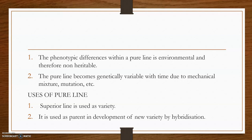During the third year, the different strains are evaluated in replicated field trials and the top performing ones are selected for further evaluation. From the fourth to the seventh year, the selected strains continue to be evaluated in field trials for two to three years, and the best genotype is identified on the basis of yield performance.